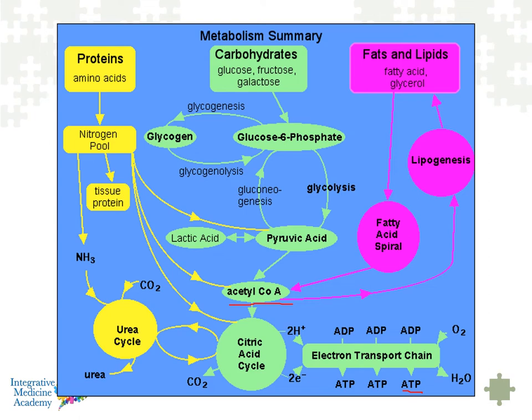Fats and carbs, their primary utilization is to generate energy. Protein has a lot of other roles in the body, so its primary purpose isn't energy production — however, it can be, through certain amino acids that can enter the citric acid cycle, either through acetyl coenzyme A or other entry points into the citric acid cycle.